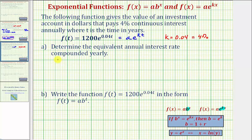Using the equation b equals e to the k, we'll determine the value of b. In this case, b is going to be equal to e to the power of, we know k is 0.04. Now we can go to the calculator and get our decimal approximation for the base b.